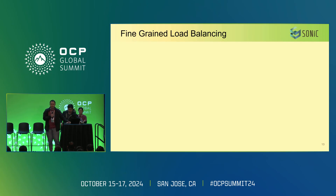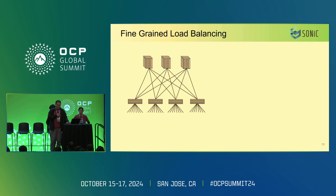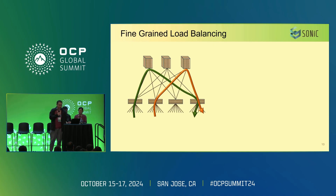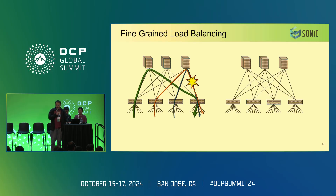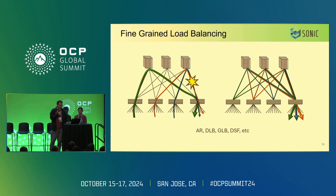Load balancing is one of the most important issues in AI networks. ECMP is a flow-level coarse-granularity load balancing mechanism that cannot achieve good performance in AI workloads due to the low entropy of AI traffic. ECMP cannot fully utilize network capacity, which slows down jobs, and multiple jobs can interfere with each other even if the network has enough capacity and is non-blocking. To address this, we need more fine-grained load balancing at the packet or flowlet level. With packet-level load balancing, we can achieve perfect load balancing.